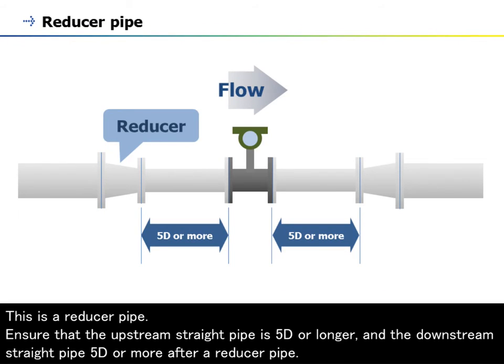This is a reducer pipe. Ensure that the upstream straight pipe is 5D or longer, and the downstream straight pipe 5D or more after a reducer pipe.